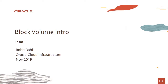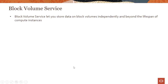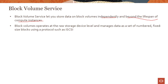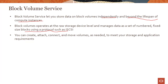In this module we'll introduce the OCI block volume service and talk about its inherent features. The block volume service lets you store data on block volumes independently and beyond the lifespan of compute instances. Block volumes operate at the raw storage device level, managing data as a set of numbered, fixed-size blocks using storage protocols such as iSCSI. You can create, attach, connect, and move volumes as needed to meet your storage and application requirements.